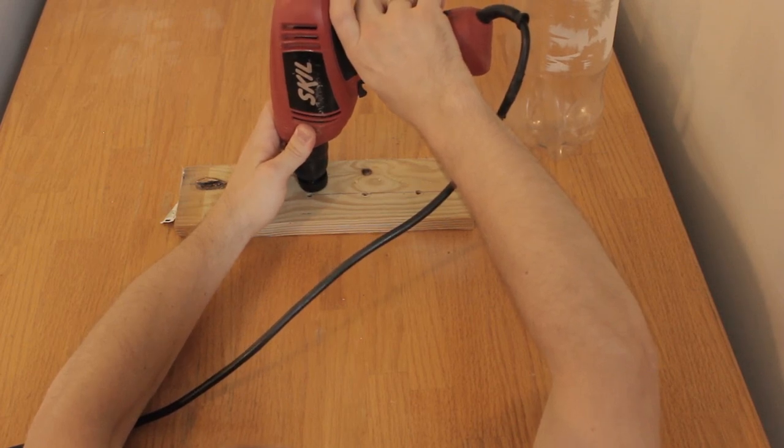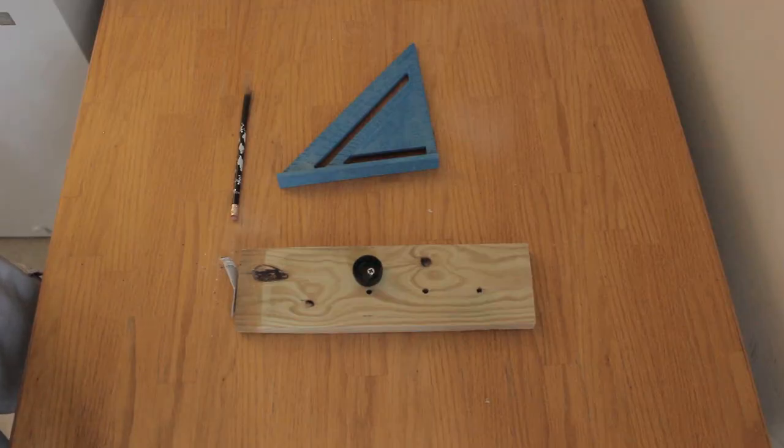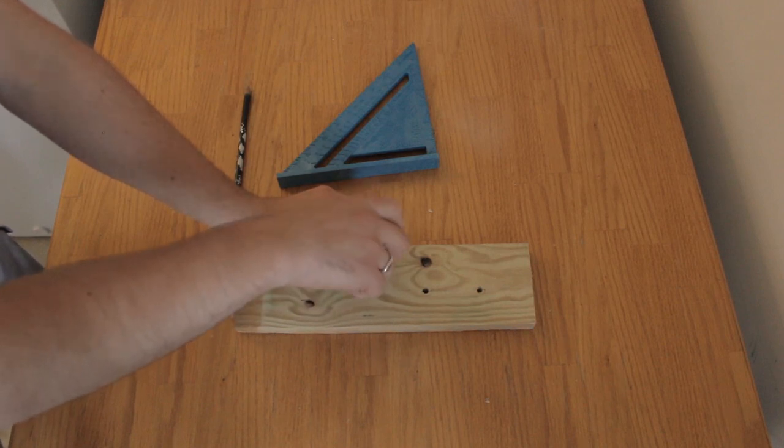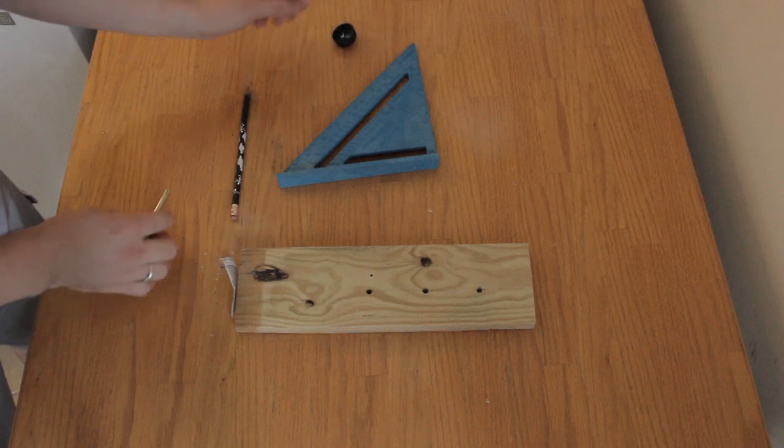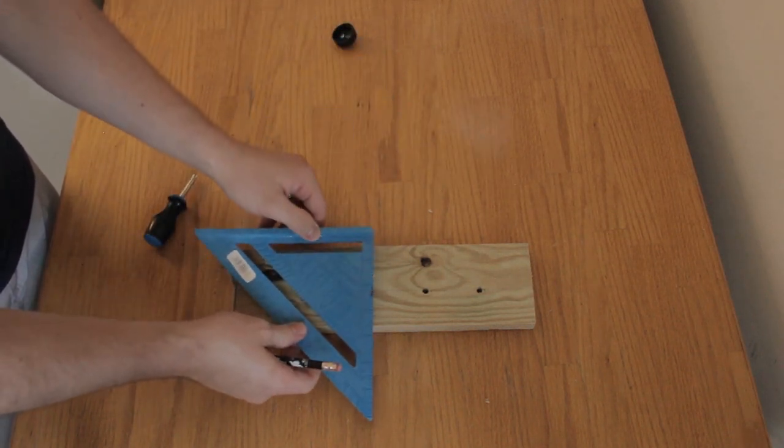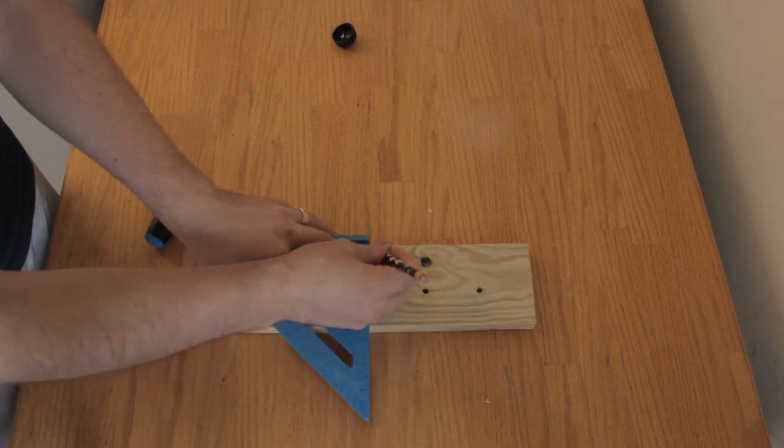Now that we've attached our bottle cap to our piece of spare wood, we're going to remove the cap and use that location to mark how we're going to attach our fins. So for that I want my carpenter square. I'm going to press against the edge here so nice and straight. Use my pencil to draw that line.